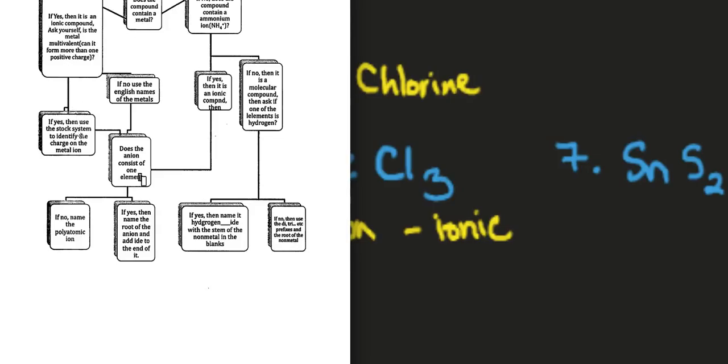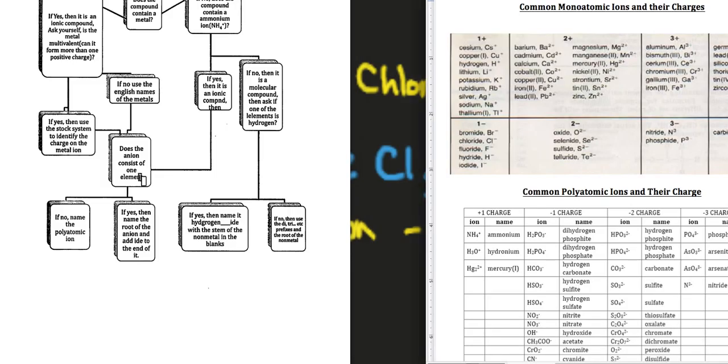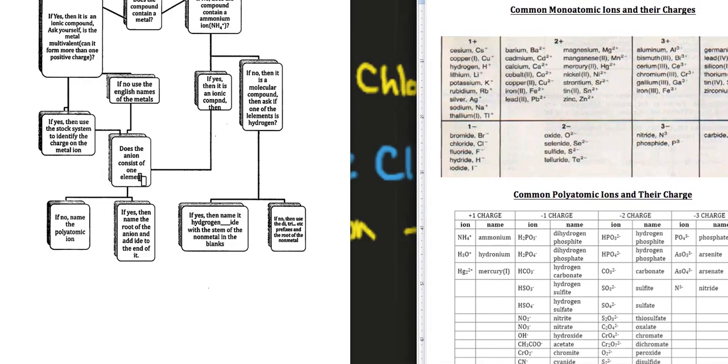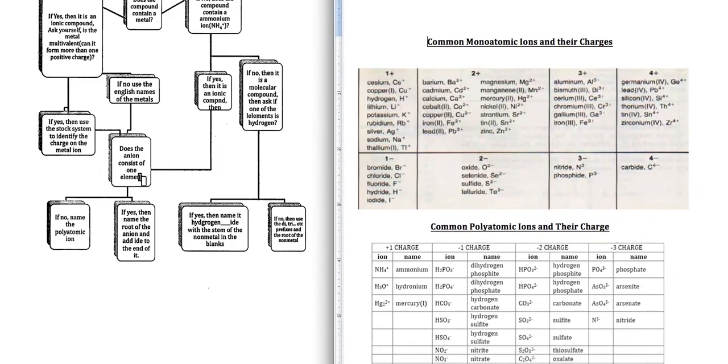Okay. Do we need to use the stock system? Does it have is it a multivalent ion? So if you don't remember your ions you would need to refer to this and you would see that iron has a possibility of being plus two or iron can be a plus three. So it's multivalent.